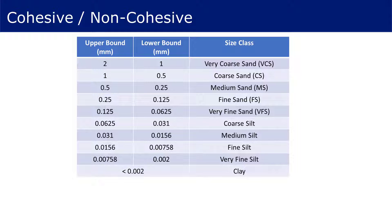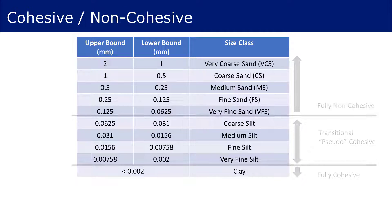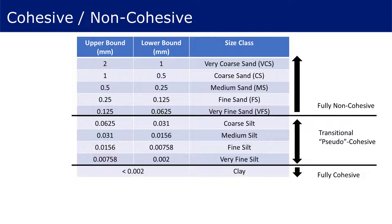Expanding on the smaller classes, silt is the description of the next class smaller than sand and has the further descriptors of coarse, medium, fine, and very fine, which represents the transition from the fully non-cohesive properties of sand to the fully cohesive properties of clay. All materials smaller than very fine silt is clay.